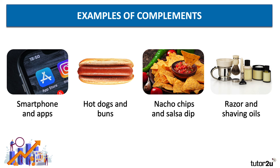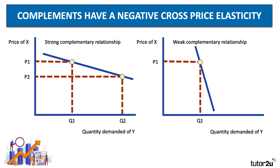Complements are goods in joint demand — they have a negative cross price elasticity. Examples include smartphones and apps, hot dogs and buns, nacho chips and salsa dip, and other products often bought together such as razors and shaving oils. In this situation, if the price of razors goes down, you'd expect the demand for shaving foam and shaving oils to rise as well. On the left-hand side, it's a strong complementary relationship: if the price of X goes down, there's a big increased demand for Y. Whereas on the right-hand side, a fall in the price of X would only lead to a relatively small change in the quantity demanded of Y.